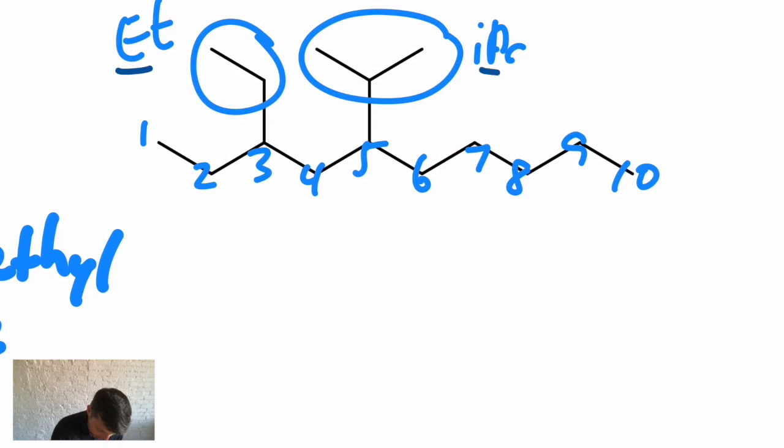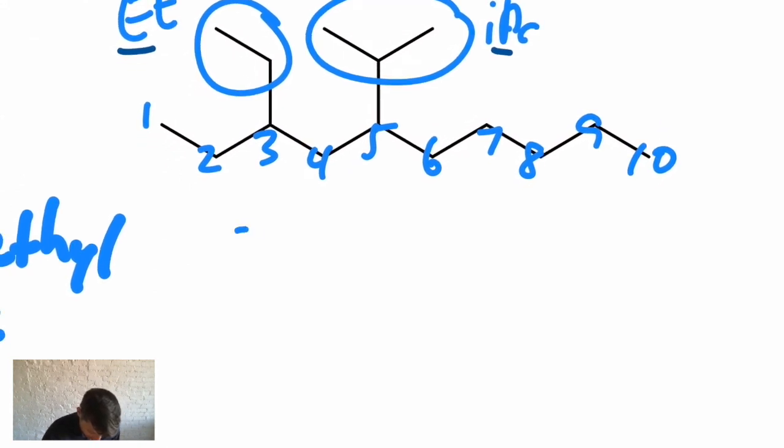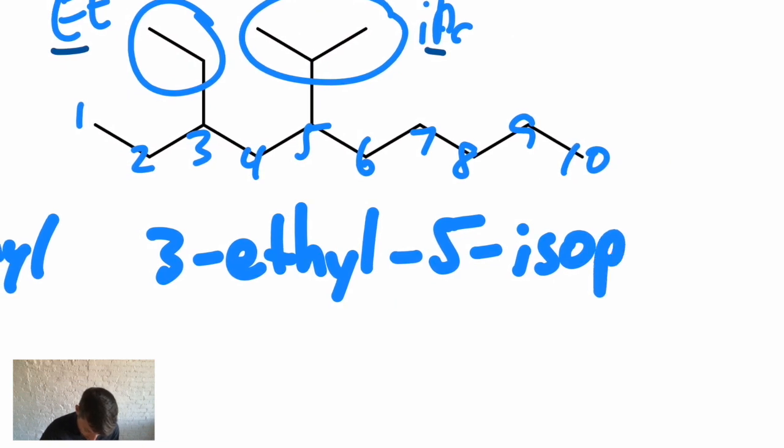Here we have an isopropyl group, and here we have an ethyl group. And alphabetically, E comes before P when you alphabetize. And then I list the numbers in front of each of those branches. So here we have two different branches: we have an ethyl on 3, so 3-ethyl-5-isopropyl.